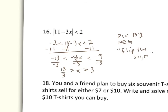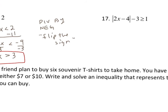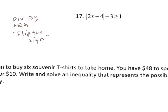So x is greater than 3 or less than 13/3. The problem just says solve, so that's the answer. For question 17, the idea is the same: get the absolute value expression by itself by adding 3, giving the absolute value of (2x minus 4) is greater than or equal to 4. Then get rid of the bars and write 2x minus 4 is greater than or equal to 4, or 2x minus 4 is less than or equal to negative 4, and take it from there.